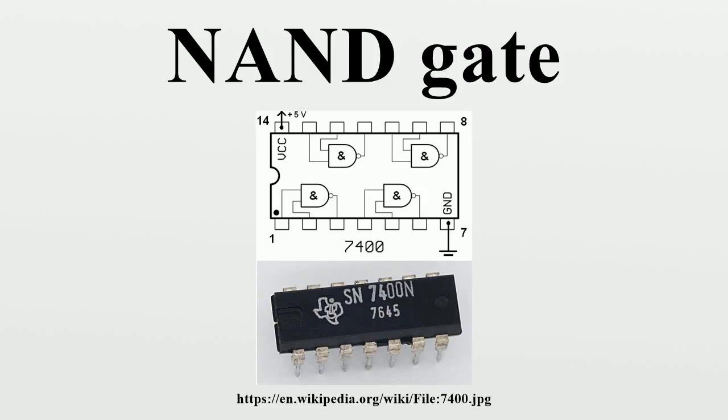By De Morgan's theorem, AB-bar equals A-bar plus B-bar, so a NAND gate is equivalent to inverters followed by an OR gate.